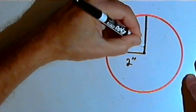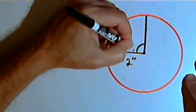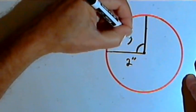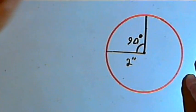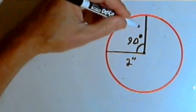And I also need to know the size of the angle that those two radii have created. And we're going to say that this angle, this central angle, is 90 degrees. With that information, I can find the area of the sector.